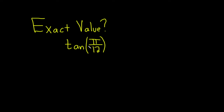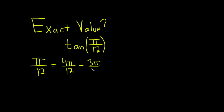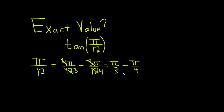Since 4 minus 3 is 1, we can write pi over 12 as 4pi over 12 minus 3pi over 12. These have been carefully chosen because they work. 4pi over 12 is the same as pi over 3, and 3pi over 12 is pi over 4. Both are very familiar angles, so we have pi over 12 written as a difference of two familiar angles.